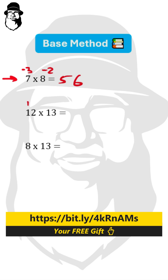Here, both numbers are above the base. 12 is plus 2, and 13 is 3 plus 10. So we do addition: 13 plus 2 is 15, or we can do 12 plus 3, which also gives us 15. That's the first part of the answer. The second part is the same—we multiply the surplus: 2 times 3 is 6. That is our answer, 156.